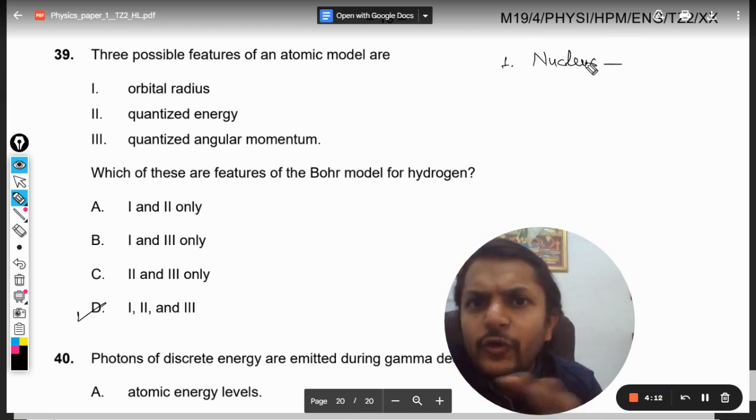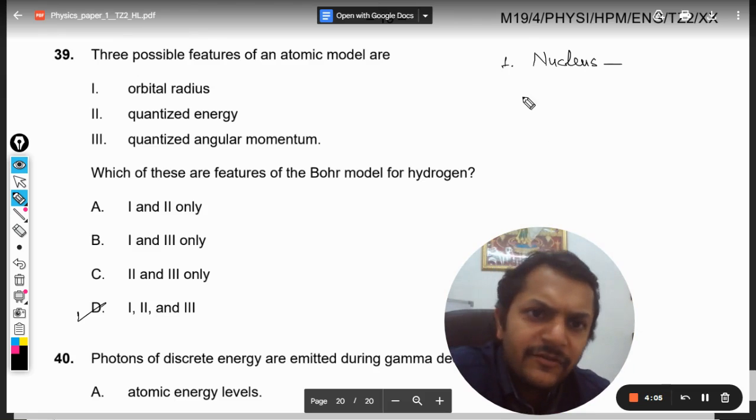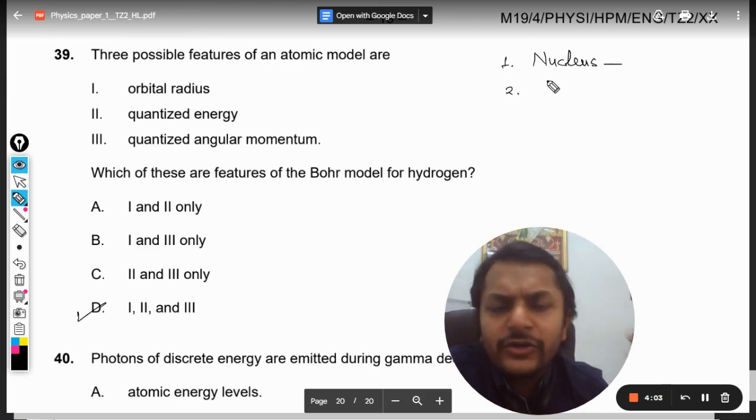I know first of all the first concept is nucleus. So according to Bohr, the concept of nucleus as given by Rutherford is completely accepted—that nucleus is the tiny particle at the center of the atom which is containing all the mass and all the charge.